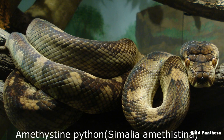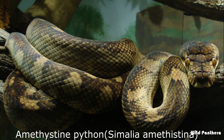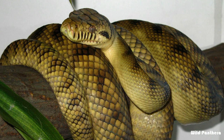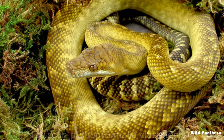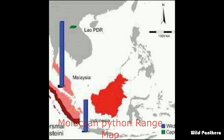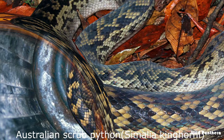Amethystine Python: This is a species of non-venomous snake belonging to the genus Simalia. This species is found in Indonesia, Papua New Guinea, and Australia. Moluccan Python: This species of python is found in Indonesia and can grow to be 8 to 9 feet in length. Australian Scrub Python: The species is indigenous to forests of Northern Australia and is one of the longest and largest snakes in Australia.